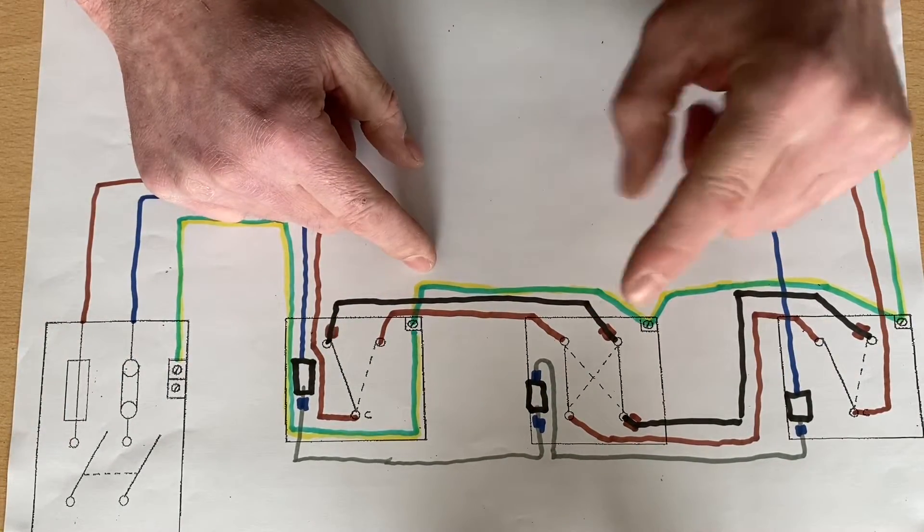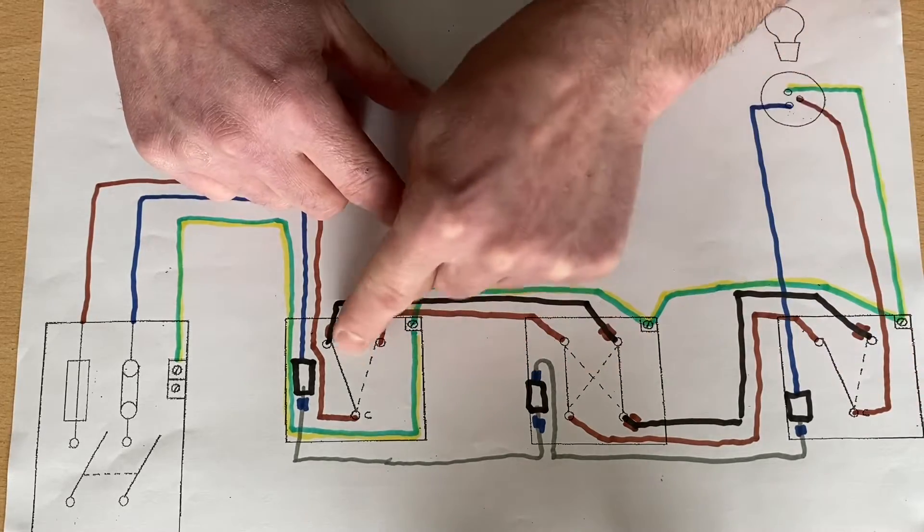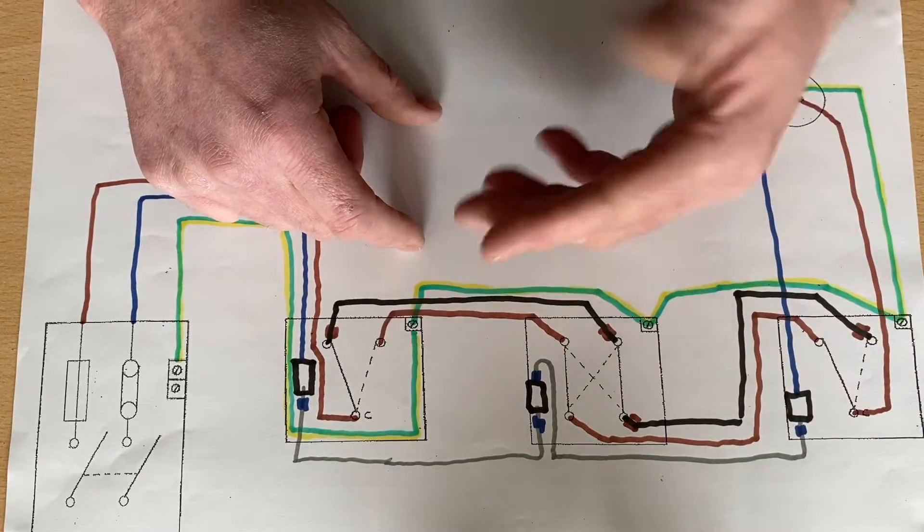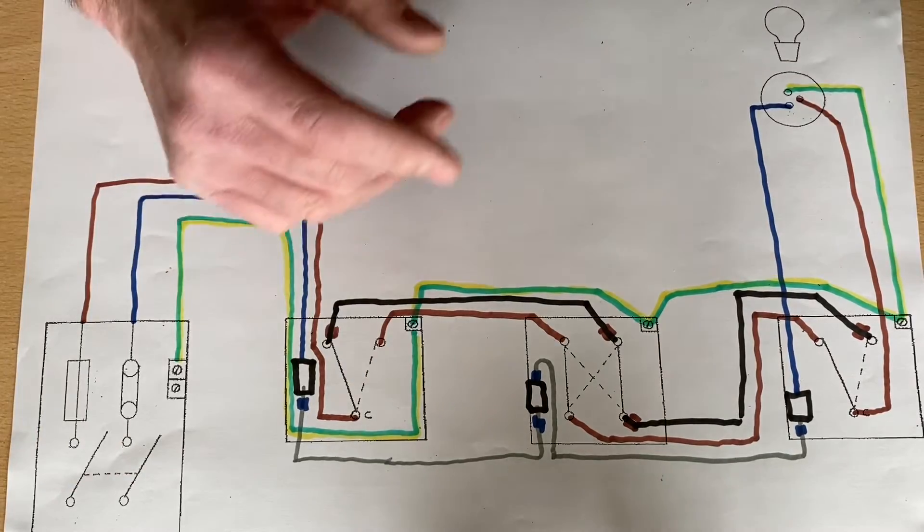So you probably would be thinking, if I've got a neutral at each of my lighting points, I could come off any of these points to feed another room. Well, let's think about that.